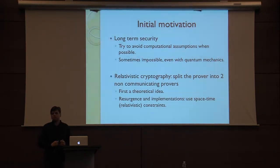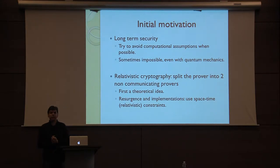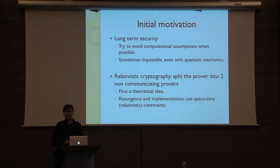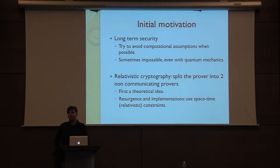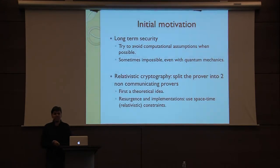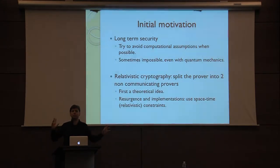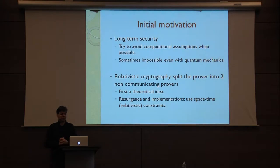It's a quantum session, so we know that sometimes with quantum mechanics we can do things like quantum key distribution, but sometimes for other primitives it's impossible, even information theoretically, even with quantum mechanics. So another idea is to use relativistic cryptography, which is a fancy name to say that we have two provers that cannot communicate.